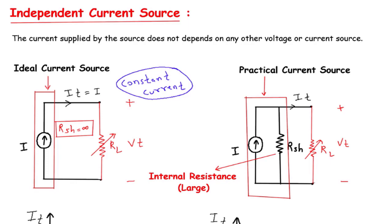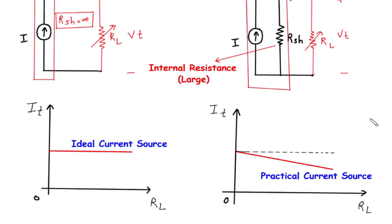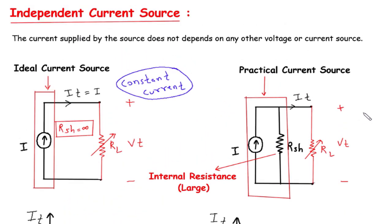To summarize, while an ideal current source delivers a constant output current irrespective of the load resistance, a practical current source exhibits variations in the output current due to its internal resistance. By comprehending these characteristics, engineers can effectively design and analyze circuits using independent current sources, guaranteeing reliable and efficient operation across a wide range of applications.